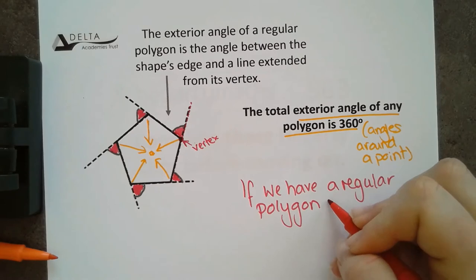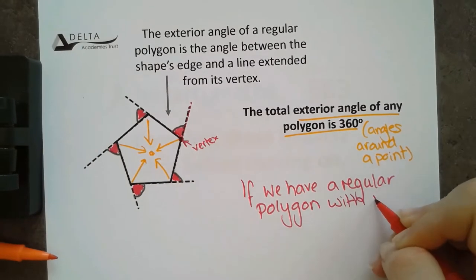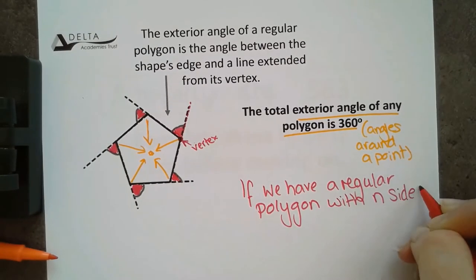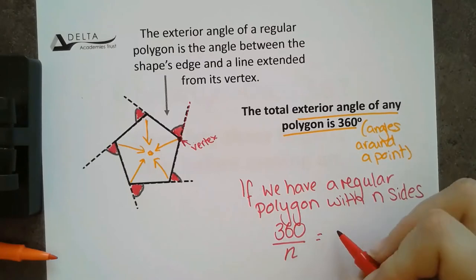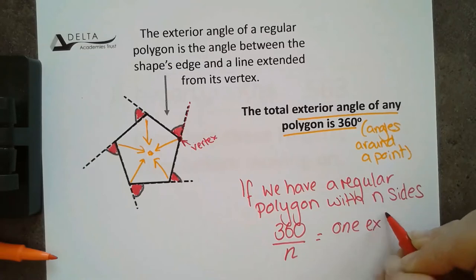So, if we say that this polygon has N sides, what we can then do is do 360 divided by N to find the value or the size of one exterior angle.